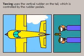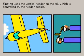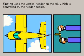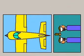Yawing is turning the plane left or right using the vertical rudder on the tail, which is controlled by foot pedals.